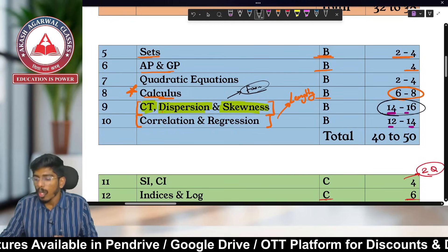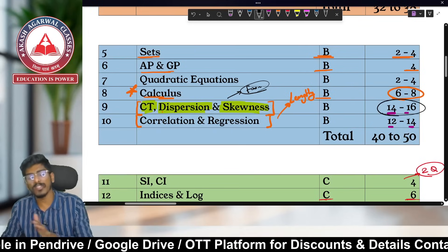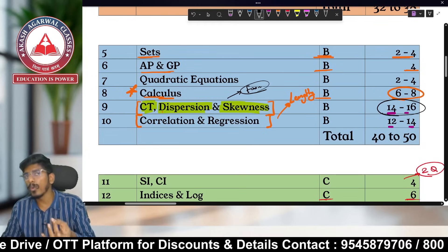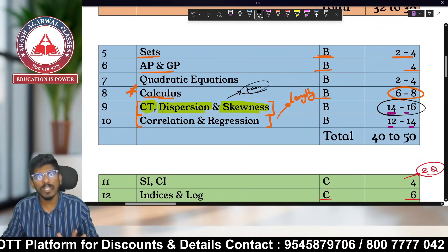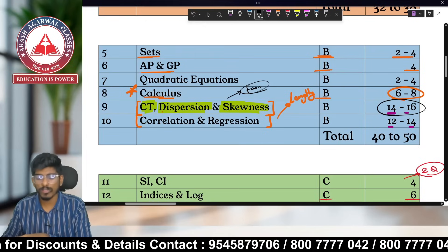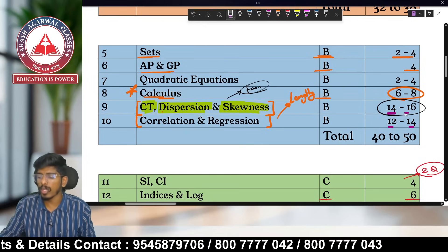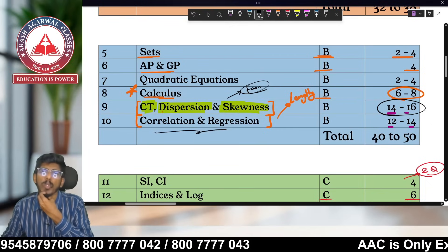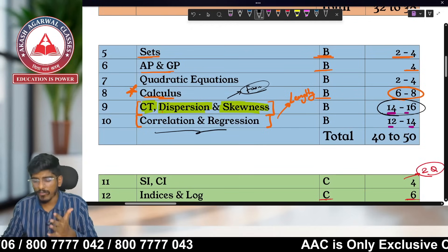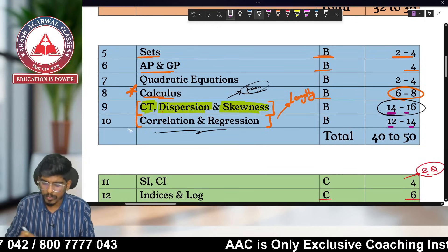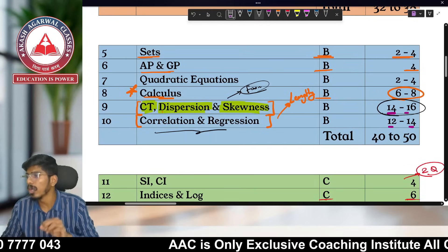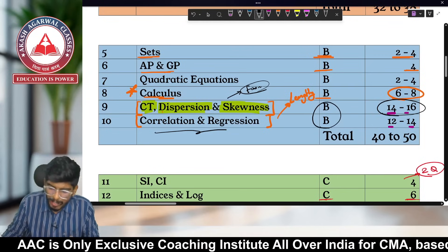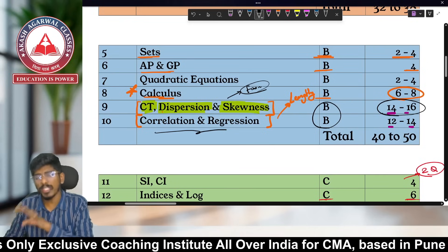Central Tendency, Dispersion & Skewness covers Mean, Median, Mode, Quartile Deviation, Mean Deviation, and Standard Deviation. If you learn the formulas and concepts clearly, this chapter is easier to score well in. Correlation and Regression, however, is trickier and requires more time. That's why both chapters are placed in Category B.